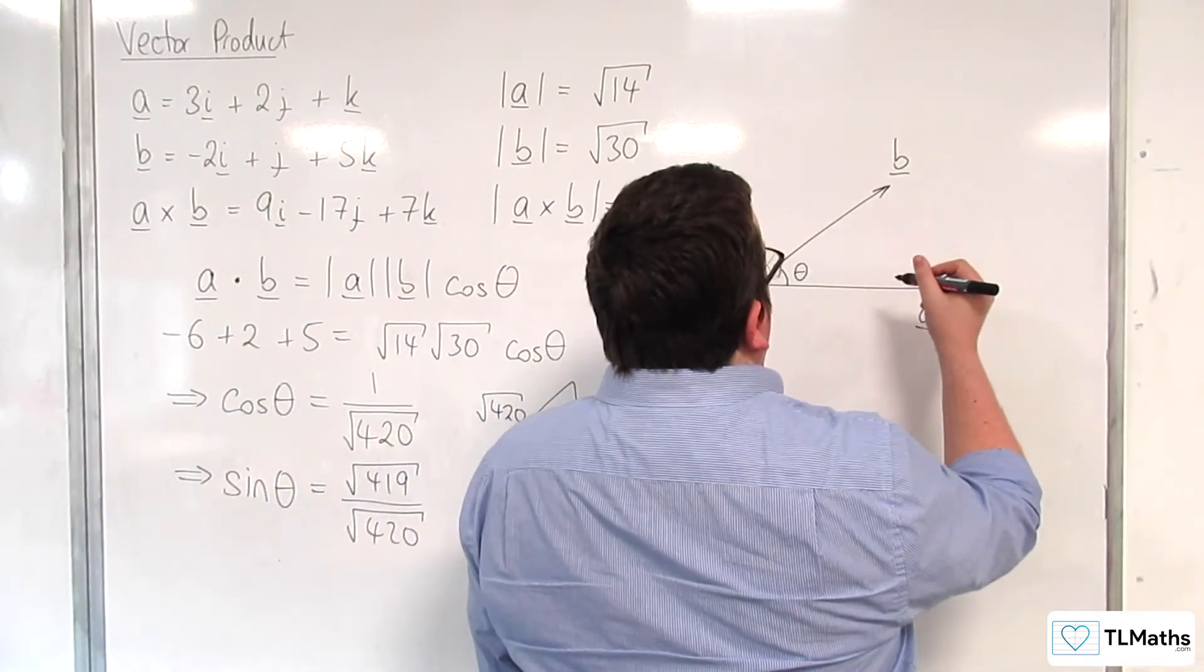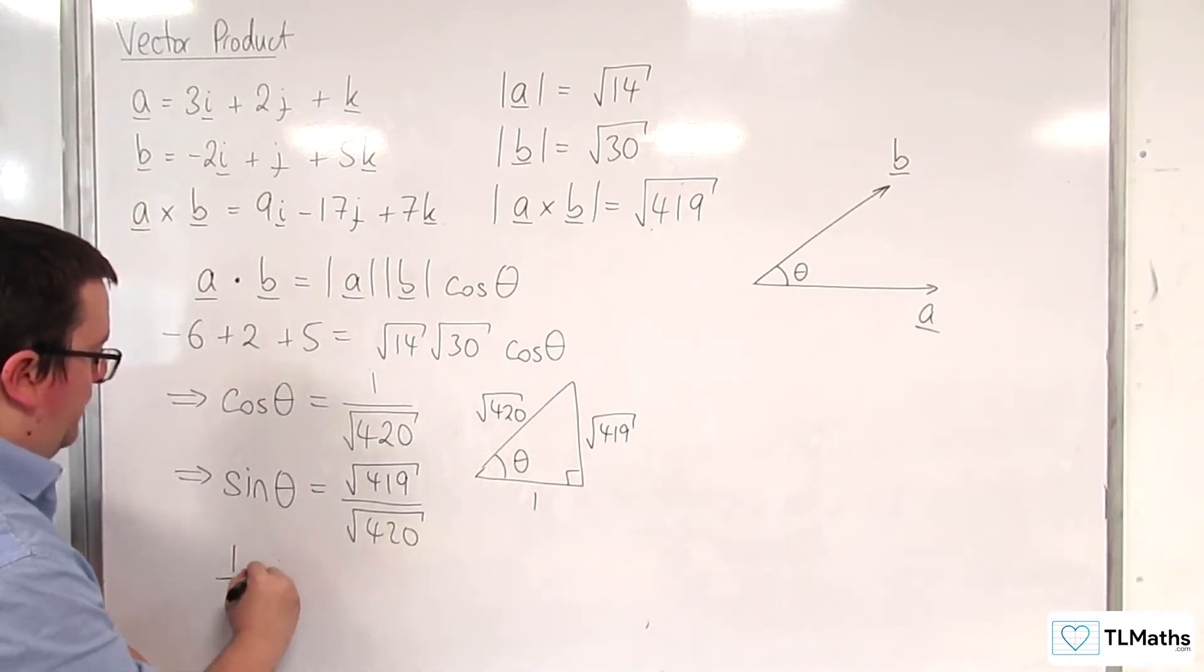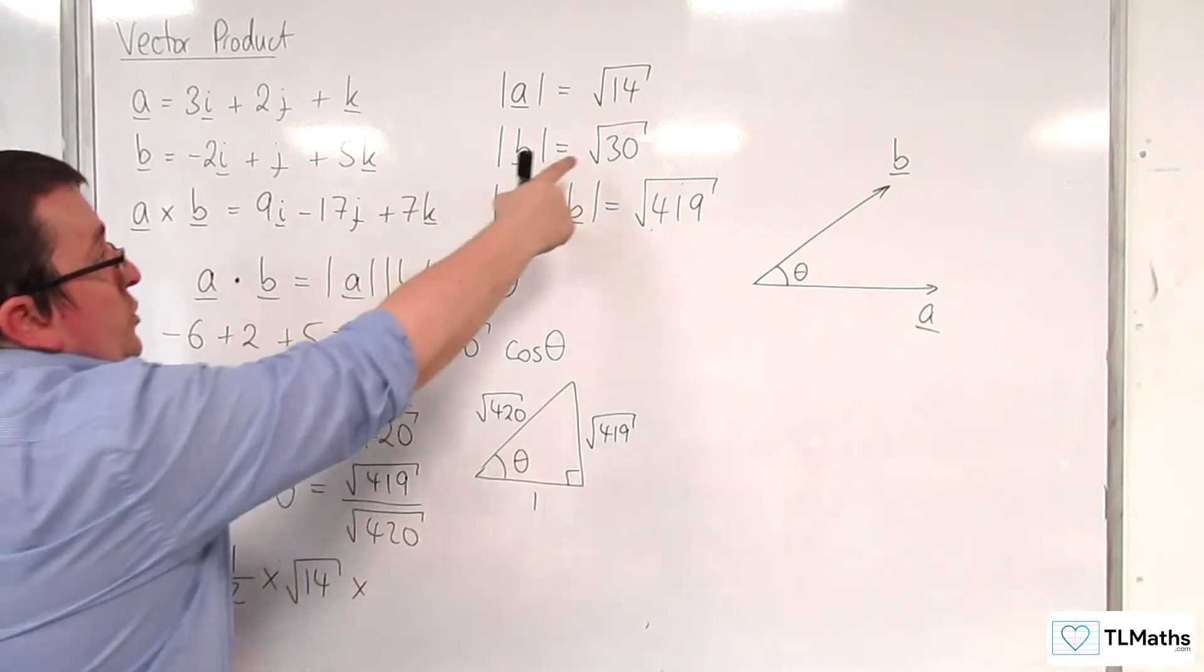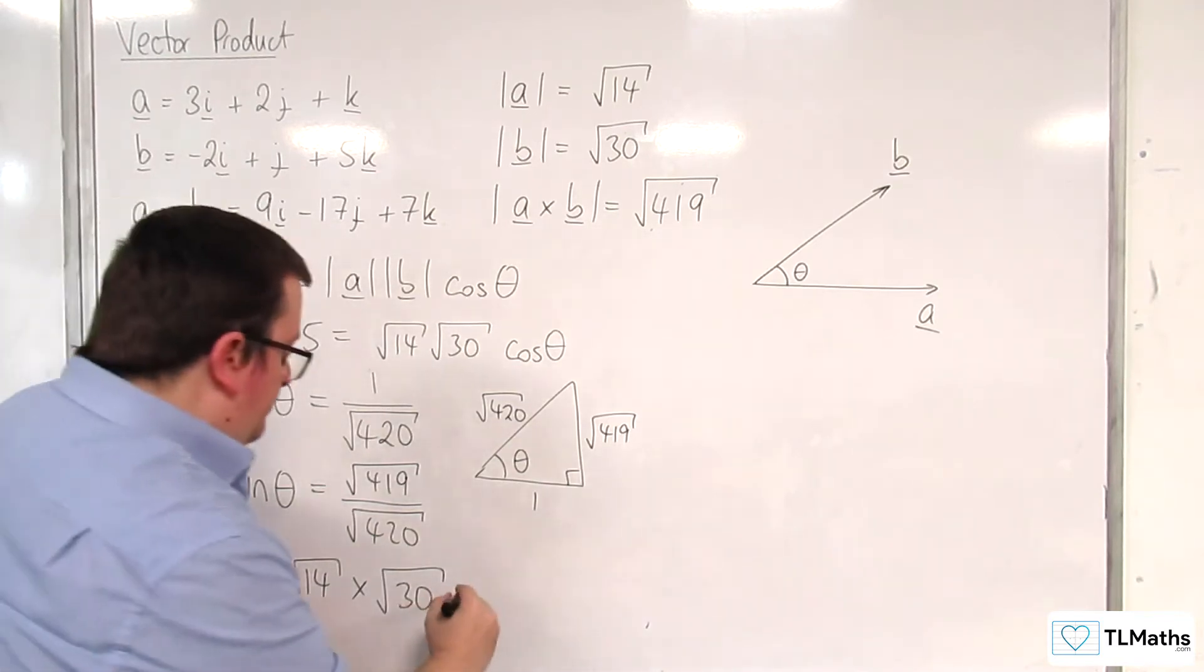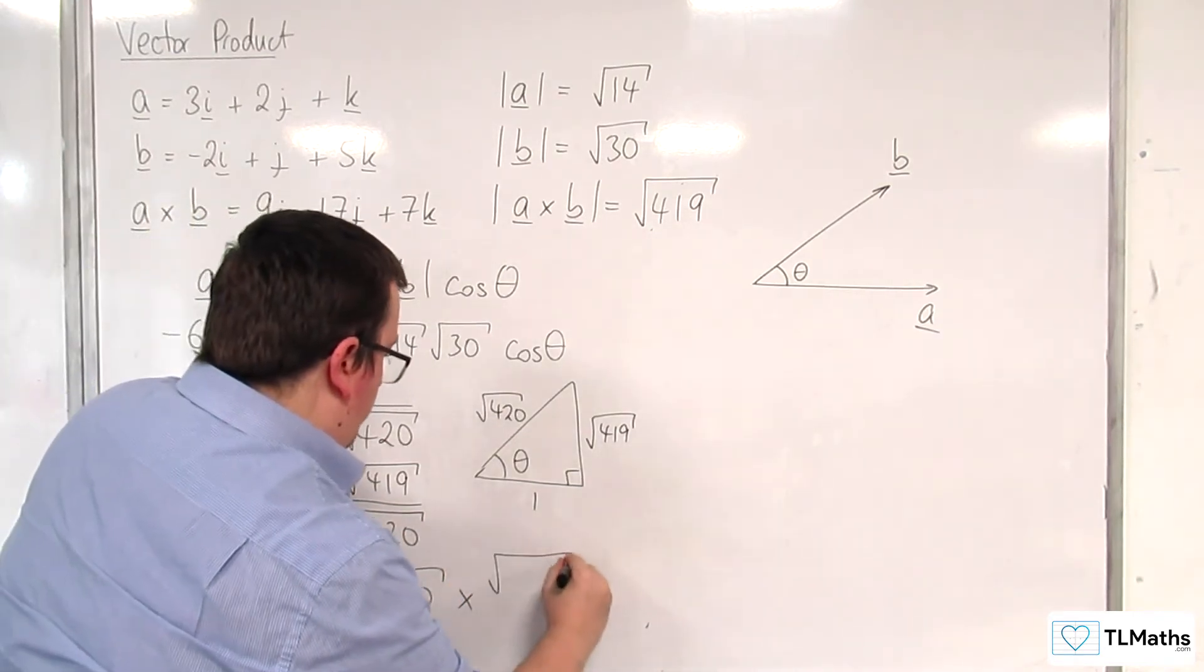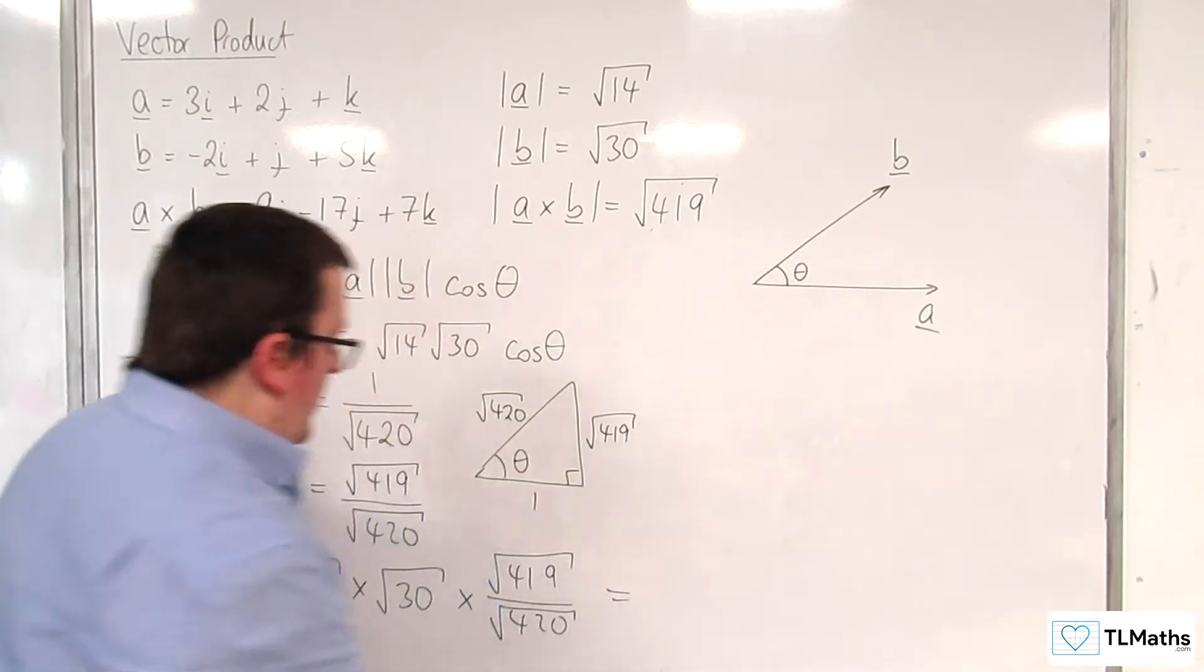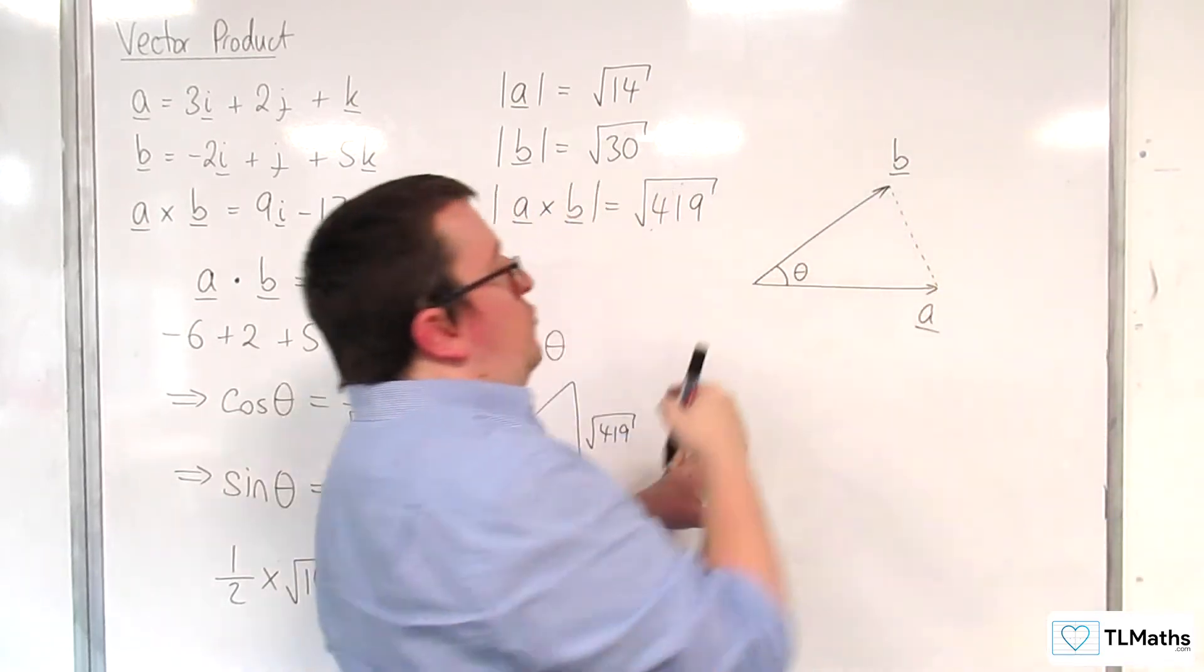So, actually, what we would get if we used that formula would be 1 half times the length of A, which is root 14, times by the length of B, which is root 30, times by sine of theta, so root 419 over root 420. So this would be the area of that triangle.